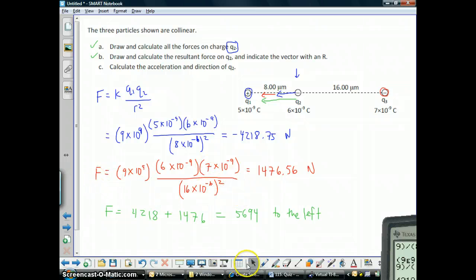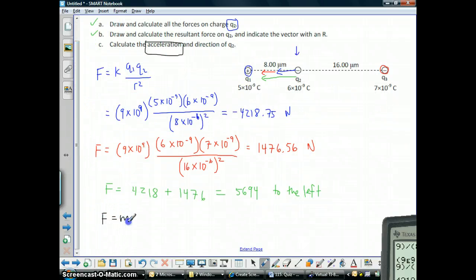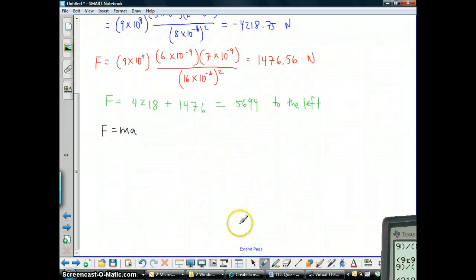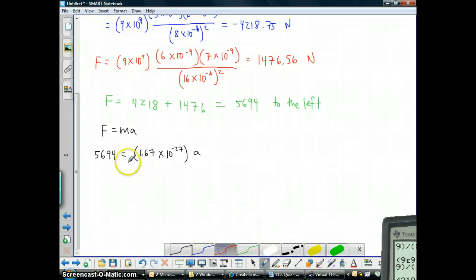And the last part to calculate acceleration. We'll use F equals MA. The force is what we just found. The mass, I think we said, was supposed to be of a neutron, which was, I think, 1.67 times 10 to the, anybody remember? Negative 27. Negative 27. Times acceleration. And so, to find acceleration, you divide by that number.